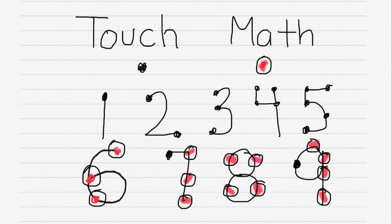For 6, we have 1, 2, 3, but we have to count them twice because they have the dot with the circle.